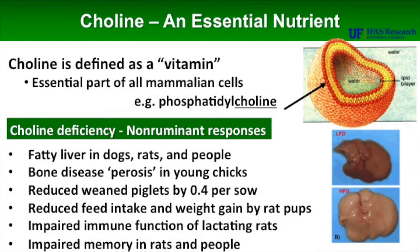With other species, the deficiency of choline in the diet often results in some very clear negative effects. For example, with rats, dogs, and people, we know that if we have a diet that's deficient in choline, we're going to get fatty liver. In fact, the key recipe for creating fatty liver in a rodent is you simply take choline out of the diet, add a little fat to the diet, and in three days you have fatty liver.